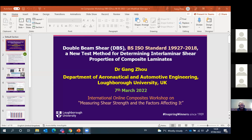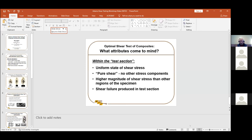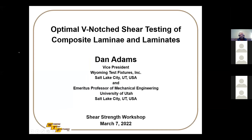Thank you very much and good afternoon. I will be speaking about V-notch shear testing of composite laminae and laminates. I work at Wyoming Test Fixtures, which is a family business that my father started, and I am also an emeritus professor at the University of Utah. When we talk about optimal shear testing, the attributes that come to mind as discriminators are: a uniform state of shear stress within the test section, pure shear with no other stress components acting, shear stresses in the test section higher than other portions of the specimen so we get failure there, and finally a shear failure produced.